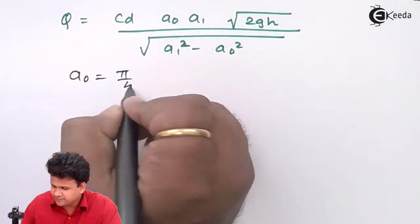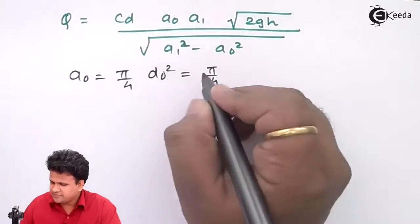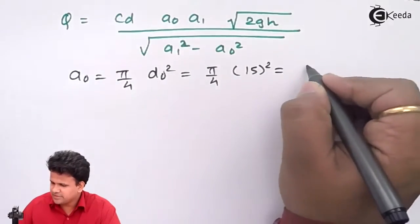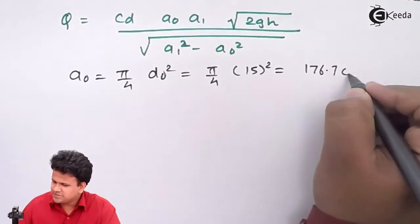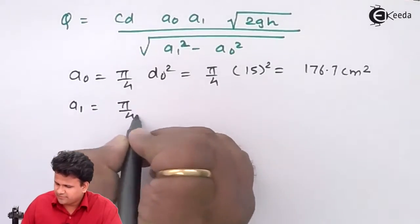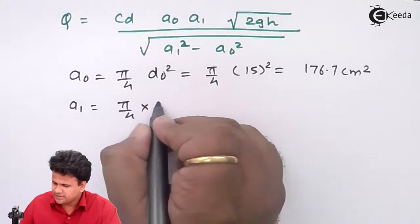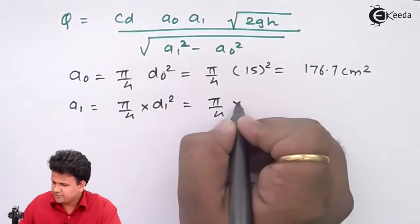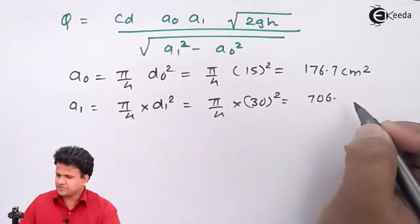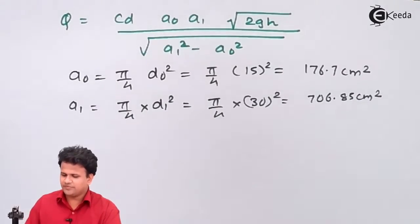First, a0 equals π/4 × d0² = π/4 × 15² = 176.7 cm². Then a1 equals π/4 × d1² = π/4 × 30² = 706.85 cm².